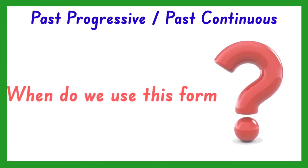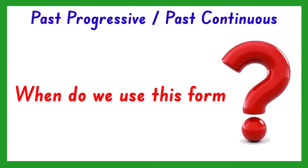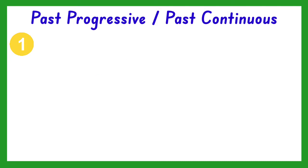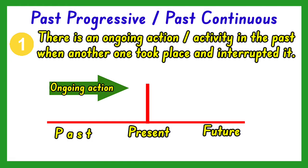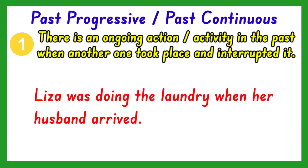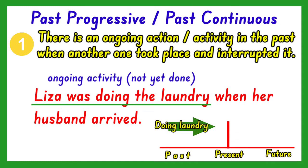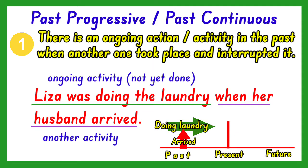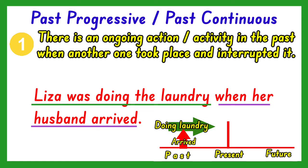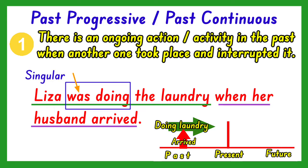Now, when do we use the past progressive form of verbs in sentences? First, we use this form of the verb if there is an ongoing action or activity in the past when another action or activity took place and interrupted it. For example, Lisa was doing the laundry when her husband arrived. There was already an action that was going on when another thing happened and interrupted it. That is why the past progressive form, which is was doing, is used. The be verb was is used because the subject is singular, which is Lisa.